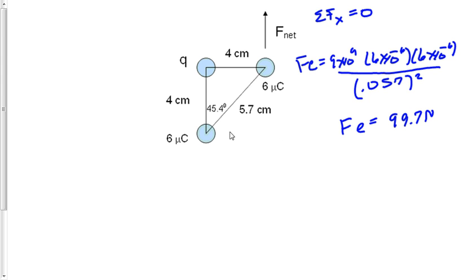Now this charge is going to repel this charge in this direction here, and also upwards. Therefore, in order for the sum of all forces in the x direction to equal 0, we know that this q value must be a negative charge.